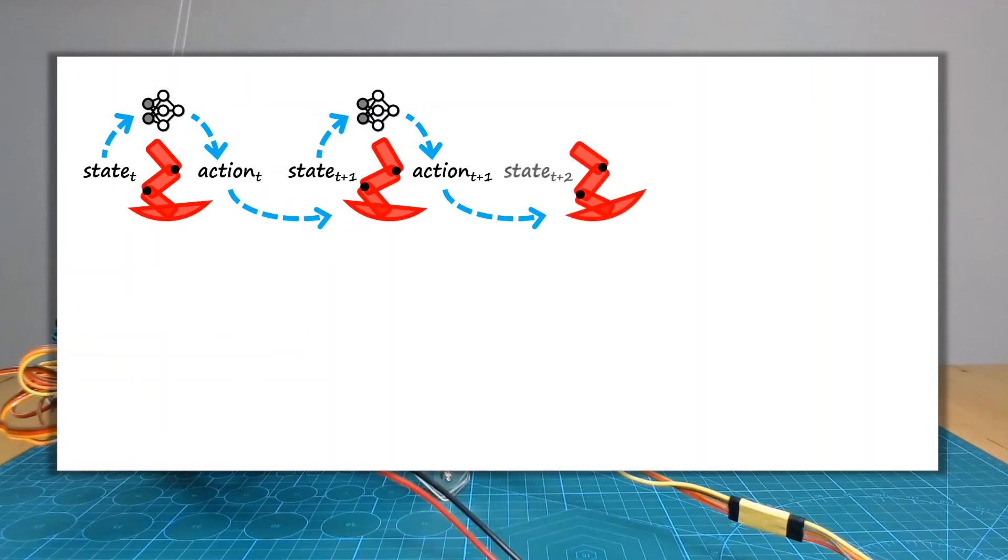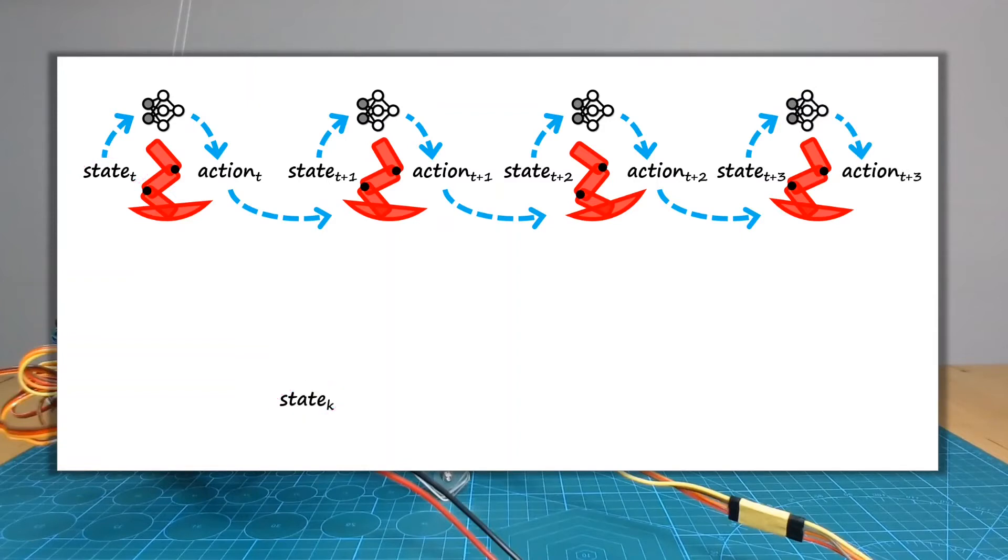We collect a sequence of their state action data and use this state and action to train a policy to copy their behavior.